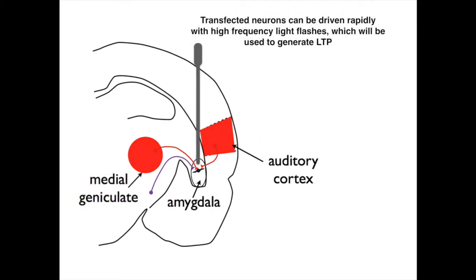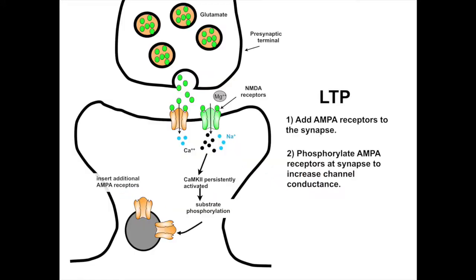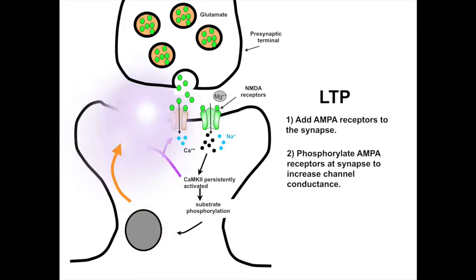The transfected neurons can be driven rapidly with high-frequency light flashes, which will be used to generate long-term potentiation. As a reminder, long-term potentiation is generated by a high calcium influx through NMDA receptors, which then triggers the additional insertion of AMPA channels into the synapse and the phosphorylation of the channels, which increases their conductance.